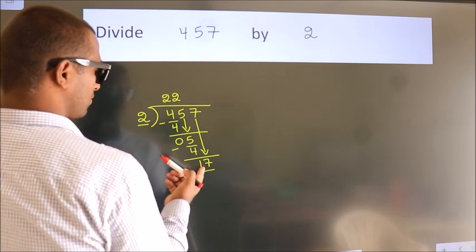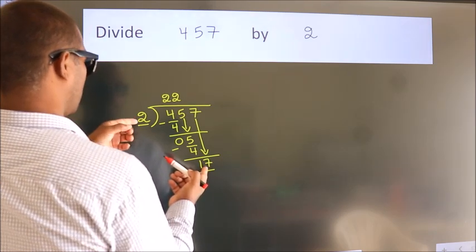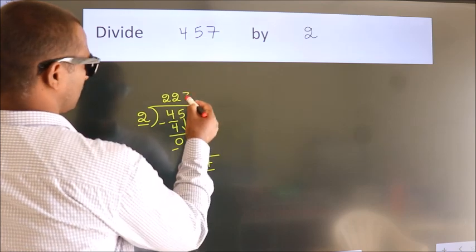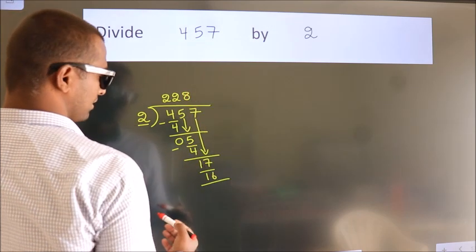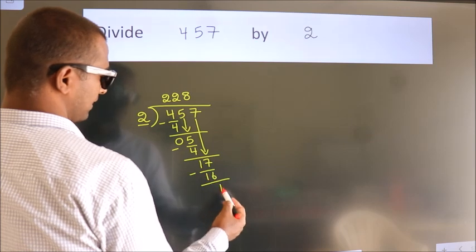A number close to 17 in 2 table is 2 8s, 16. Now, we subtract. We get 1.